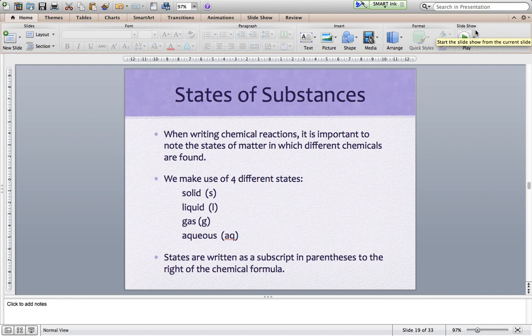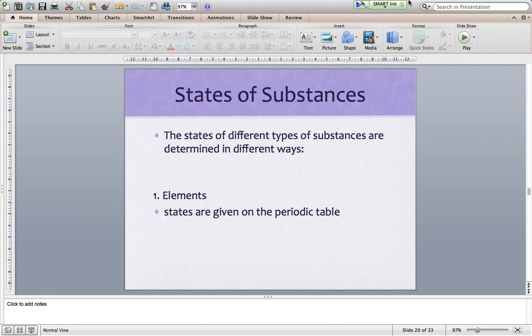As I said previously, states are written in as a subscript in parentheses to the right of the chemical formula. When we assign states, there is kind of a methodical way of going about it. It depends what type of substance you're looking at. First of all, if we're taking a look at elements, elements are maybe one of the easier substances to assign states to because all their states are given on the periodic table.